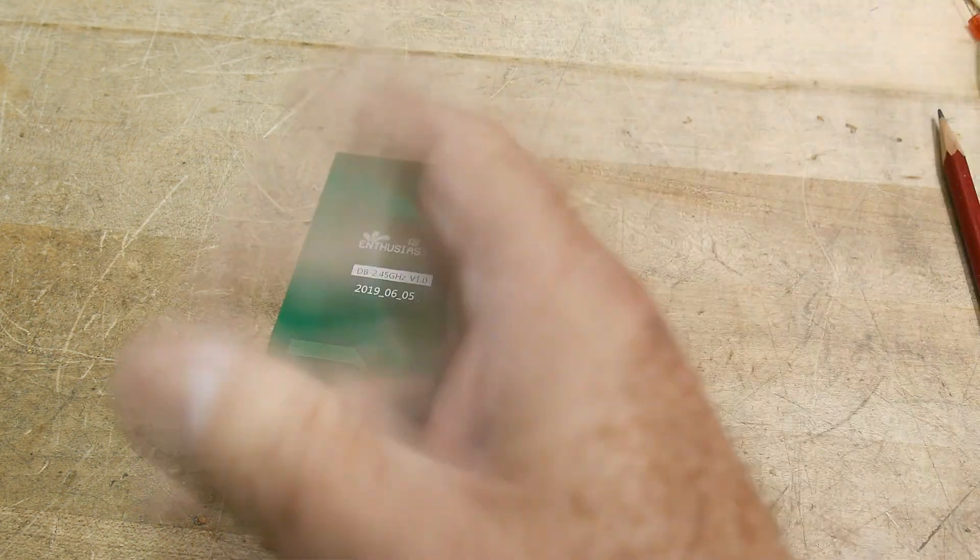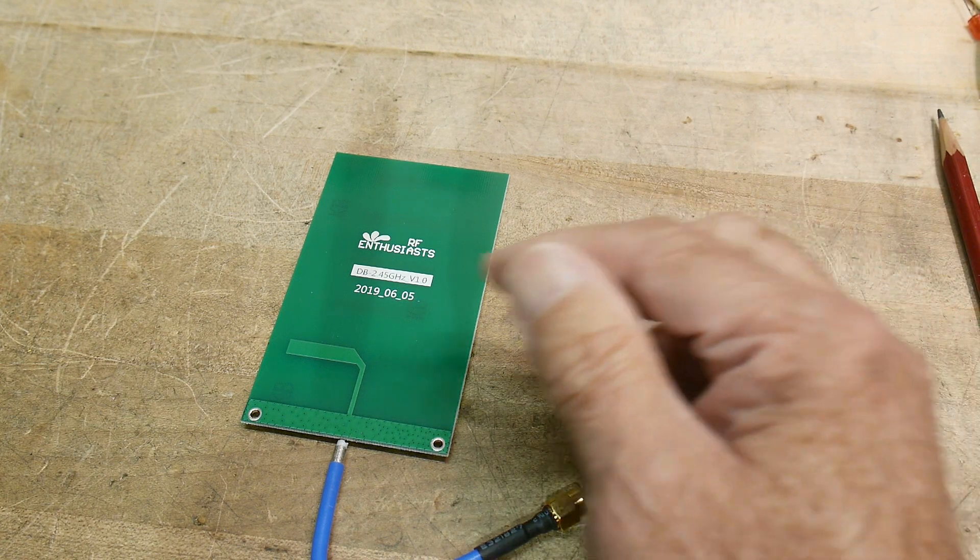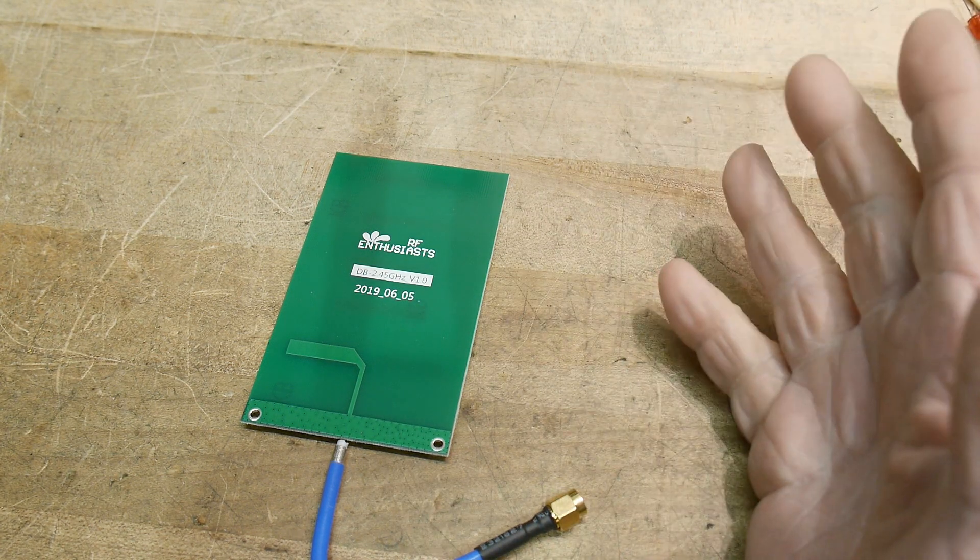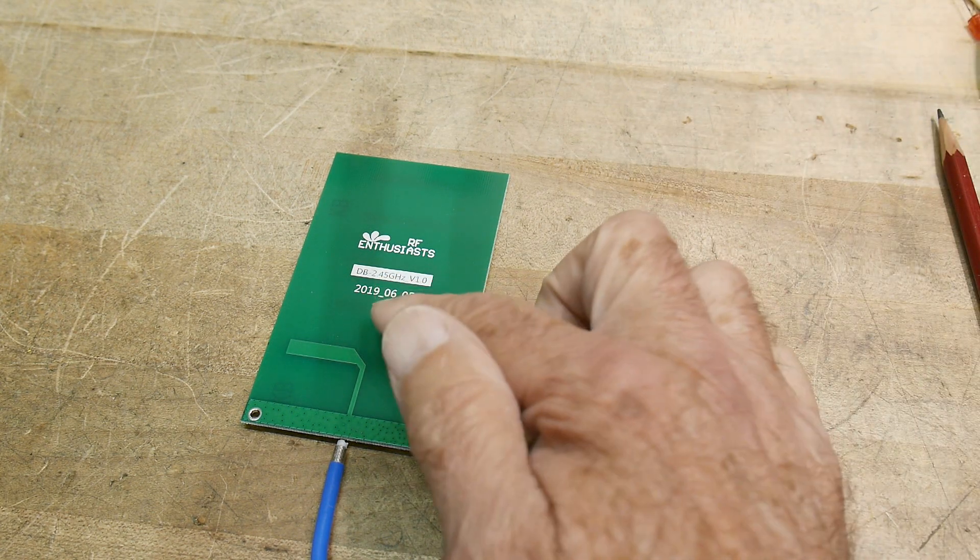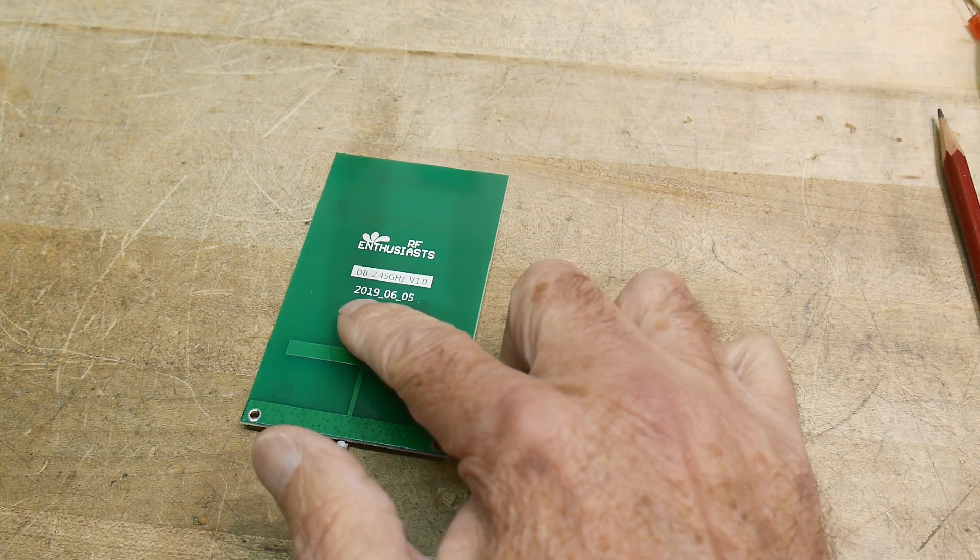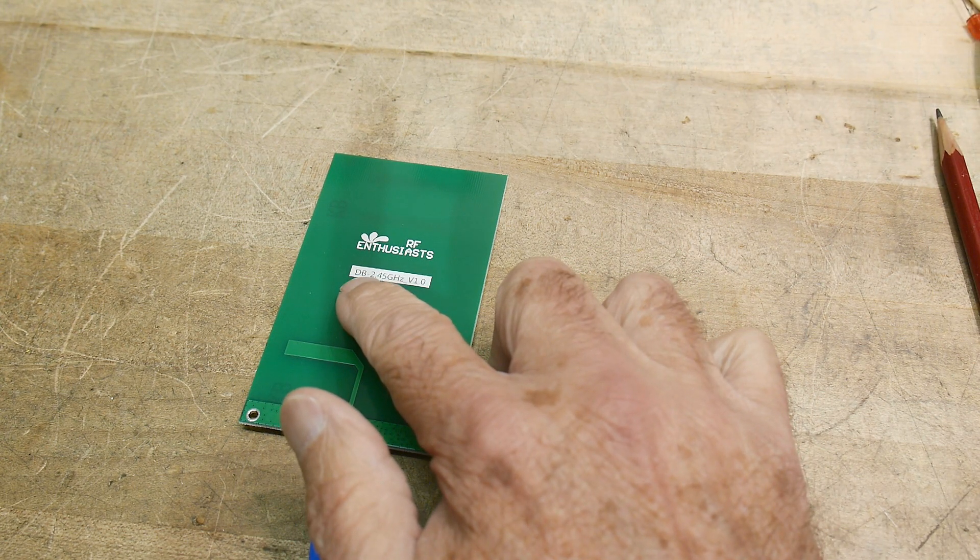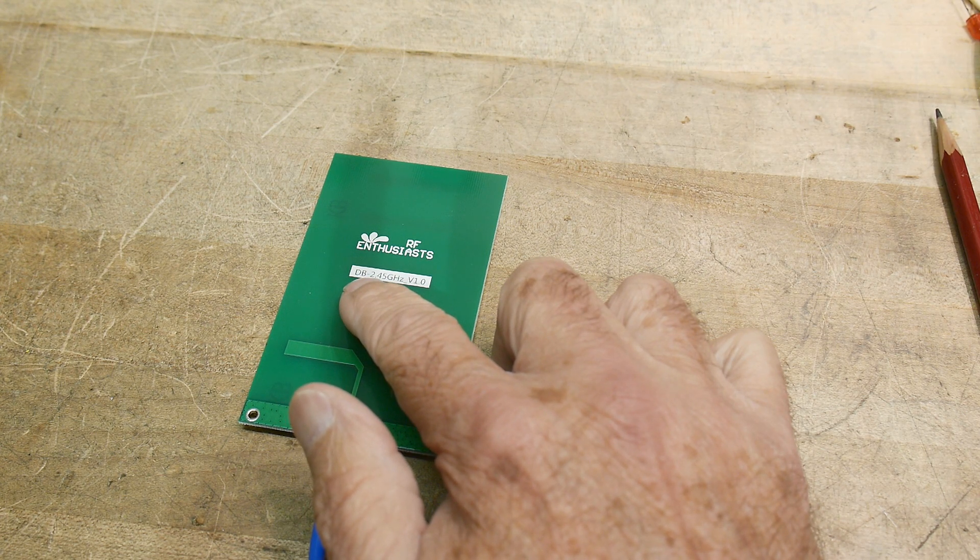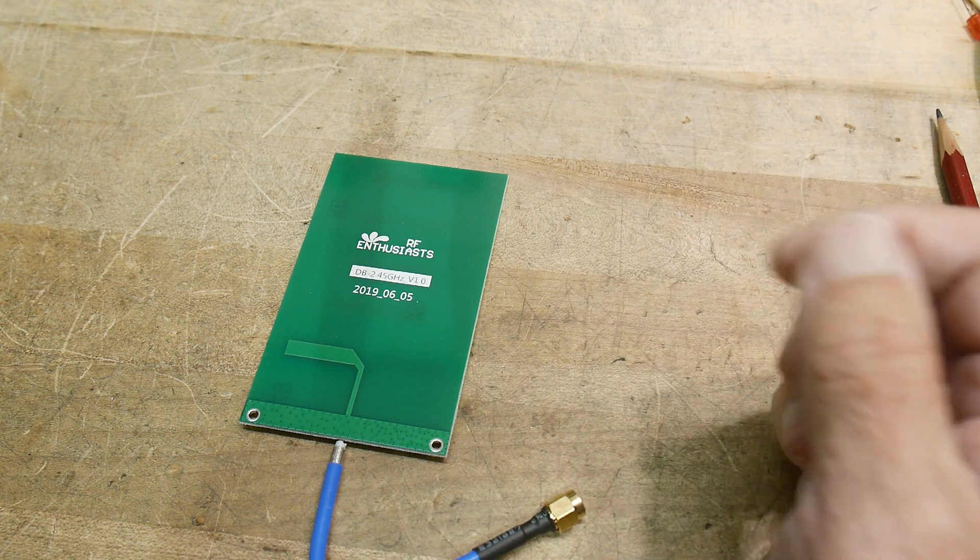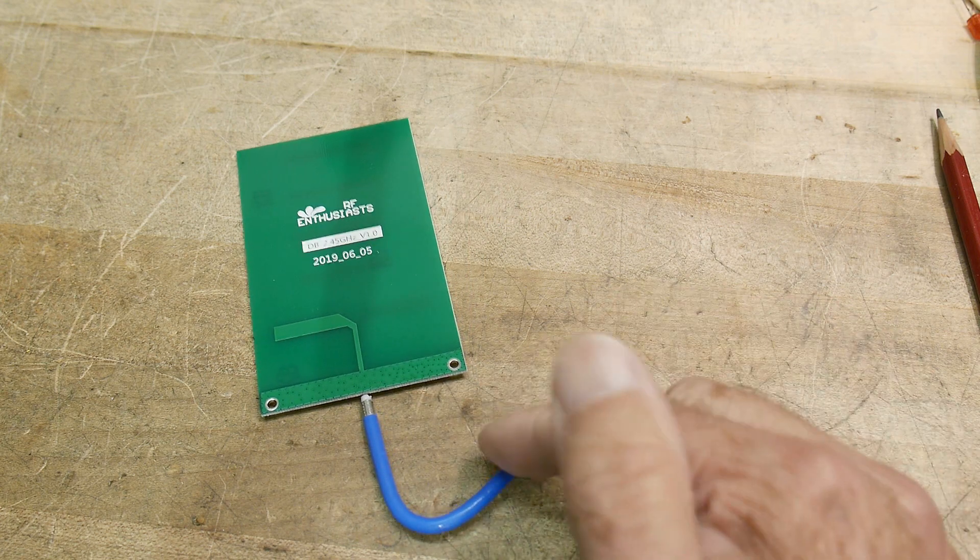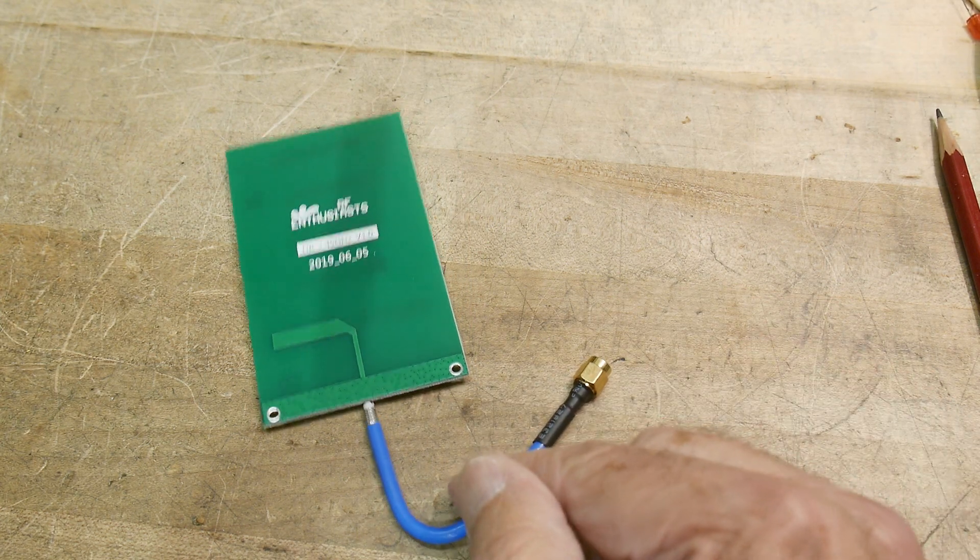They just take a picture of it and clone it or whatever. And then they sell it and try to make a profit. 2019, okay. It's supposed to be a 2.45 gigahertz version 1.0. Nice, this one comes with a little coax attached to it, so that's pretty cool.